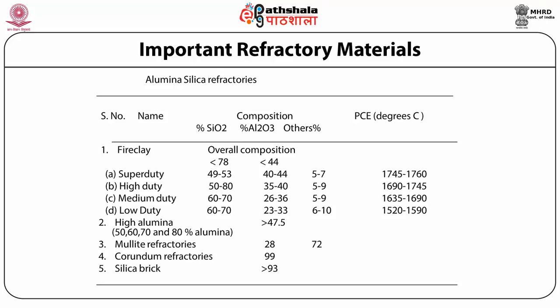Alumina silica refractories: refractories in the Al2O3-SiO2 system vary in composition from nearly pure silica (greater than 93% silica) as in silica brick, to nearly pure alumina (greater than 99% alumina) as in corundum refractories. Most of the refractories in this category are prepared from fire clay, a class of minerals containing mostly alumina and silica. A table gives the summary of alumina silica refractories.